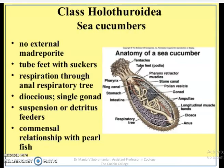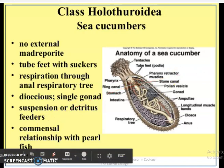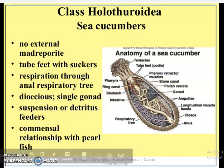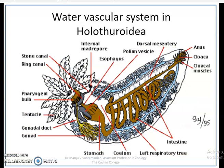Next is the water vascular system in Holothuroidia. Compared to other echinoderms, holothuroids lack an external Madreporite. They have tube feet with suckers, and for respiration they have a respiratory tree. They are dioecious with a single gonad, are suspension or detritus feeders, and have a commensal relationship with pearl fish. A good example is the sea cucumber.